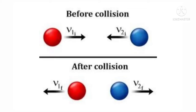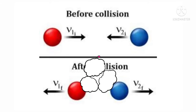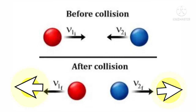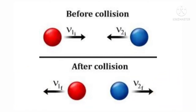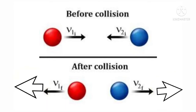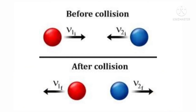Suppose two balls of different masses collide with each other. During collision, the two balls gain the same momentum but in opposite directions. Since the balls have different masses, they will accelerate differently, from Newton's second law of motion.